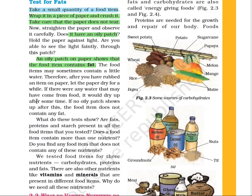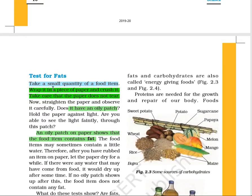The third test is for fats, and it is very simple. Take a small quantity of food item, wrap it in a piece of paper and crush it. When you open the paper, you will see an oily patch. That oily patch on paper shows that the food item contains fat.